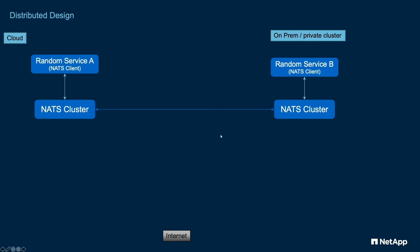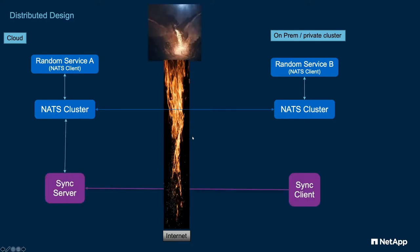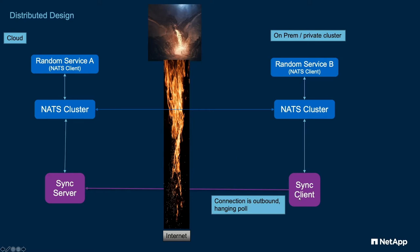This goes across the internet, through firewalls. We've got figurative fire-breathing dragons out there ready to stomp on your data, steal it, and do other things you would not like. To make this get through the firewalls, the client side really needs to be an outbound connection. We can't go inbound onto the private cluster — no one's going to open up a port for us. So the ports have to be outbound, and we use a hanging poll for that. All the traffic travels through the sync client up to the sync server, and the sync client then requests messages to come back down and replay on the local cluster.